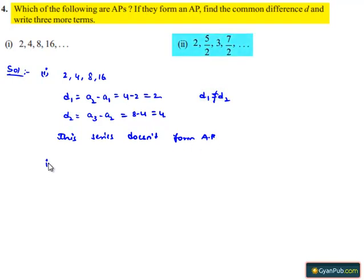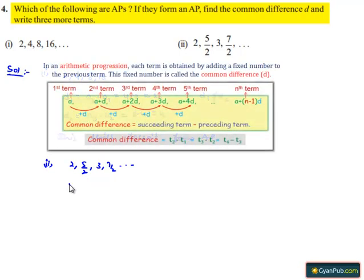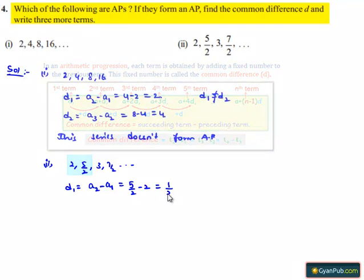Now moving on to the second part. The series given is 2, 5/2, 3, 7/2, and so on. Let d1 be the difference between the second and first term, that is a2 minus a1, which is equal to 5/2 minus 2. Taking LCM 2, that is 5 minus 4 by 2, which is 1/2.